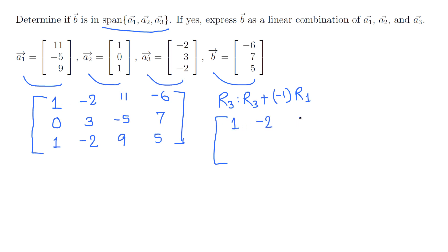But r3 will now be: 1 plus negative 1 that's 0, negative 2 plus positive 2 is 0 as well, 9 plus negative 11 that's negative 2, 5 plus 6 is 11. We got 0, 0, and pivot element. We got pivot in each row: 1, 3, negative 2.